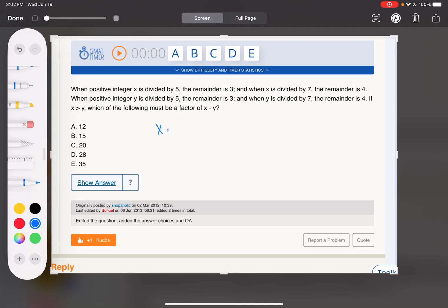When x is divided by 5, the remainder is 3, so x is a multiple of 5 plus 3. And when x is divided by 7, the remainder is 4, so x is a multiple of 7 plus 4.